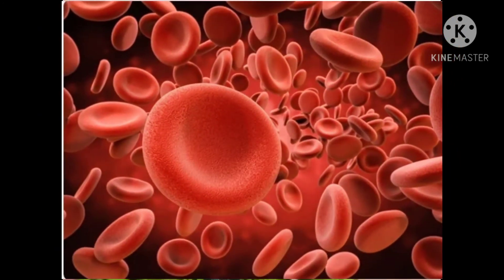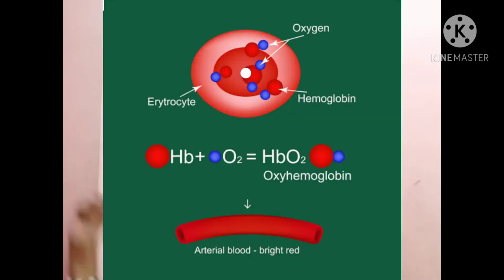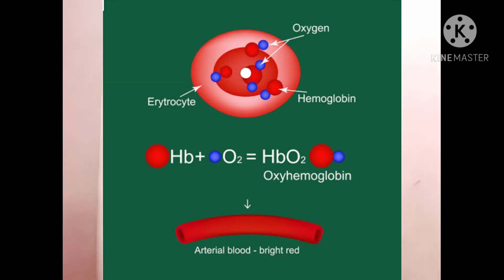First, we will learn about red blood cells or RBCs. These are disc-shaped cells consisting of a red pigment called hemoglobin. They help to transport oxygen. Hemoglobin combines with oxygen to form oxyhemoglobin. In cells, oxyhemoglobin breaks down to release oxygen, which is then utilized for respiration.